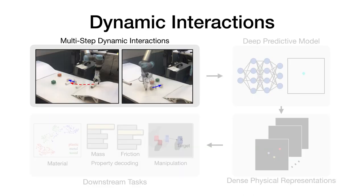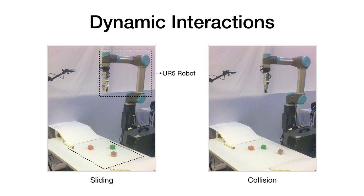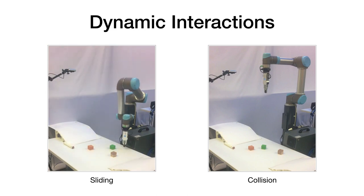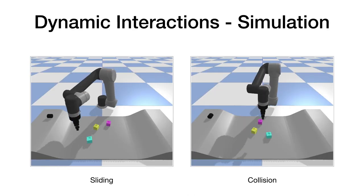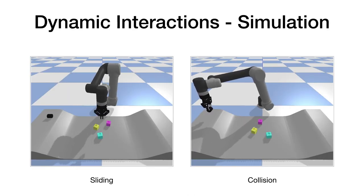We designed two types of dynamic interactions to accentuate the physical properties of objects: sliding and collision. For sliding, the robot executes a push at high speeds so that the object can slide after the push. For collisions, the robot grasps an auxiliary cylinder and lets it roll down the ramp to collide with an object. Here is the action in simulation using PyBullet.